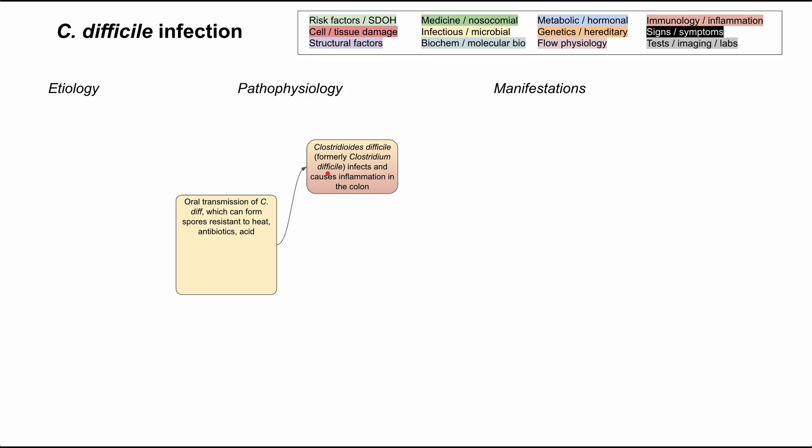In order for it to infect and cause inflammation of the colon, you need oral transmission — in some way you consumed or had oral transmission of C. diff. This works because C. diff can form spores that are resistant to heat, antibiotics, and acid. These are very resilient spores that end up in your mouth, into your GI tract, where they can proliferate. You can have hospital-acquired infections through contaminated surfaces and medical equipment, or community-acquired fecal-oral route transmission.